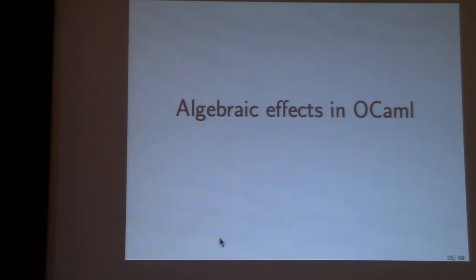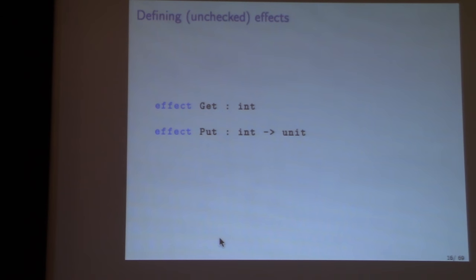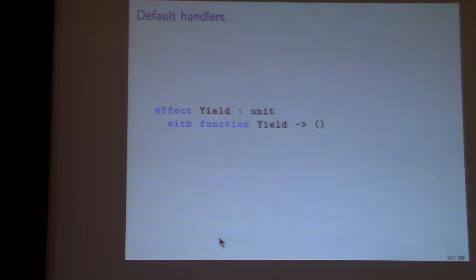For implementation in OCaml, effects are currently untyped so they're defined standalone, much like exception definitions. You write 'effect Get' or 'effect Put' to define them. An additional feature is default handlers — for example, an effect called yield that returns unit can be given a default handler that just returns unit. That's like putting a handler at the very bottom of the program, so if there isn't another handler inside it, it defaults to that behavior.